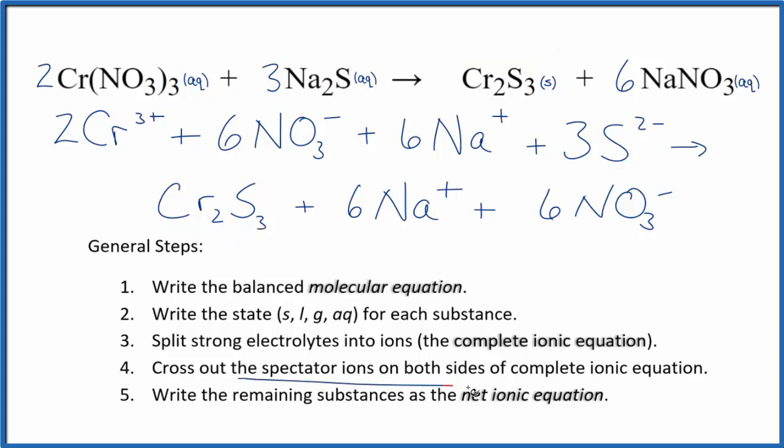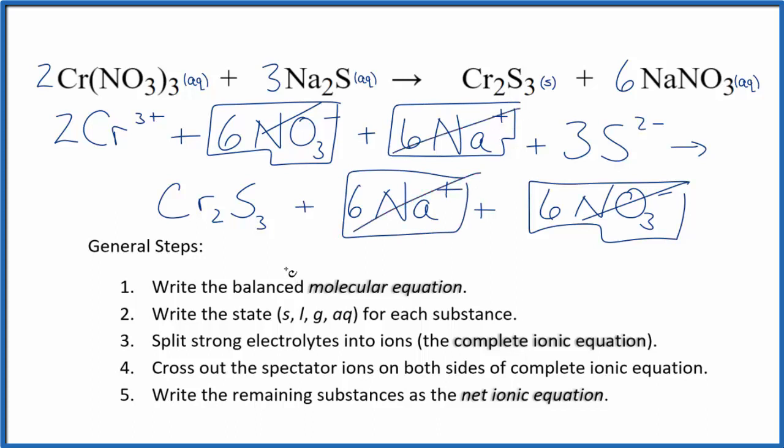Now we can cross out the spectator ions. They're on both sides. In the reactants, I have 6 of these nitrate ions. In the products, I have 6 nitrate ions. Let's get rid of those. 6 sodium ions in the reactants and again in the products. These are spectator ions. We cross them out.